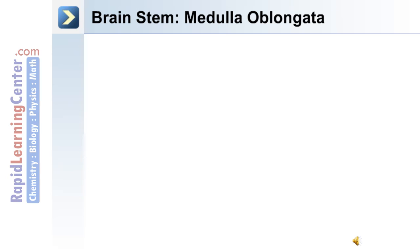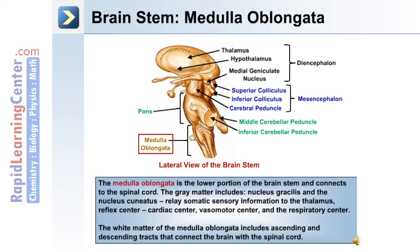The lower portion of the brainstem is the medulla oblongata, which is continuous with the spinal cord. In its gray matter are the nucleus gracilis and nucleus cuneatus, which relay somatic sensory information to the thalamus, along with the reflex center, cardiac center, vasomotor center, and respiratory center. The white matter of the medulla oblongata includes ascending and descending tracts that connect the superior brain with the spinal cord.